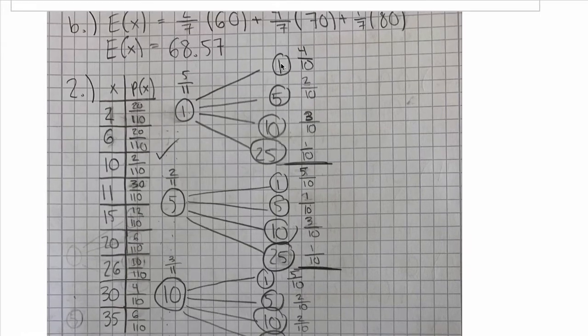And the probability, then, of the second one being a penny is four-tenths because now there's four pennies left in the purse and ten total coins. So that means the probability of getting two one-cent coins when you reach for two coins in this purse is going to be five-elevenths times four-tenths, which is 20 out of 110. So that's where this probability comes from.